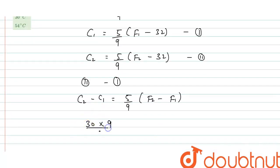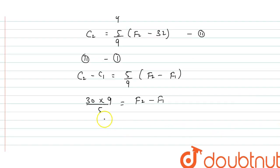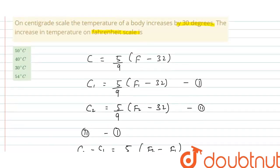30 times 9 upon 5 equals the increase in temperature in Fahrenheit, F2 minus F1. So this equals 6 times 9, which is 54. So increase in temperature in Fahrenheit is 54 degrees. So you can see 54 degrees, correct option is 54 degrees.